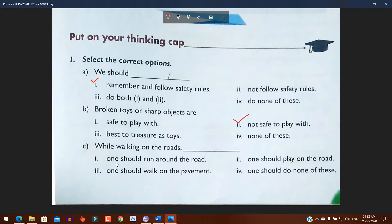Number C: While walking on the roads: number one, one should run around the road; number two, one should play on the road; number three, one should walk on the pavement; number four, none of this. The answer is number three: one should walk on the pavement.